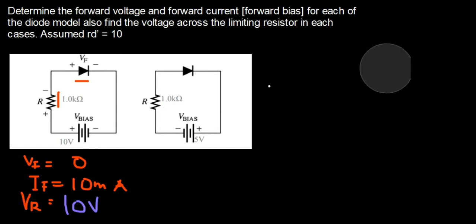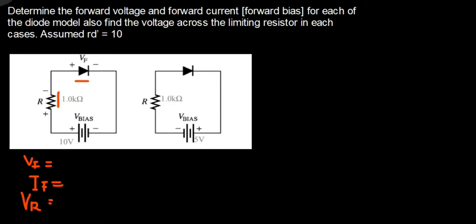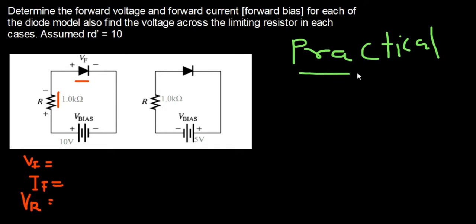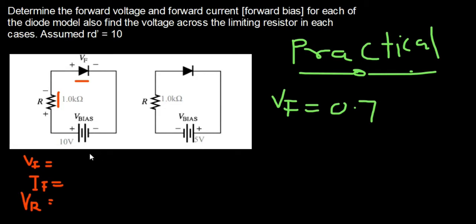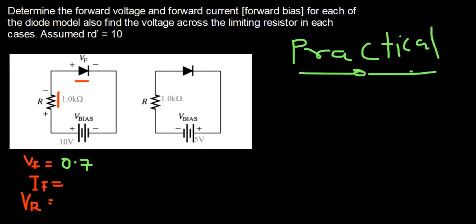Now let's do the same for the practical diode. Practical diodes have a voltage drop of 0.7V for silicon, or 0.3V for germanium. So VF = 0.7V. The diode is in series with the resistor, so IF = IR. We use Kirchhoff's voltage law: VB = VR + VF, which gives us VB = IF × R + VF.